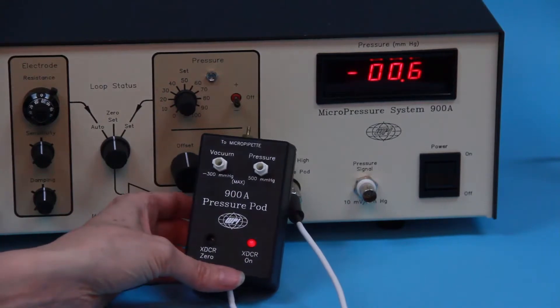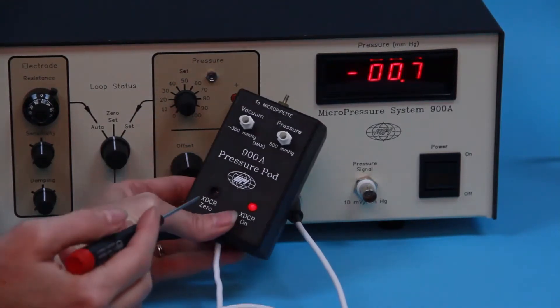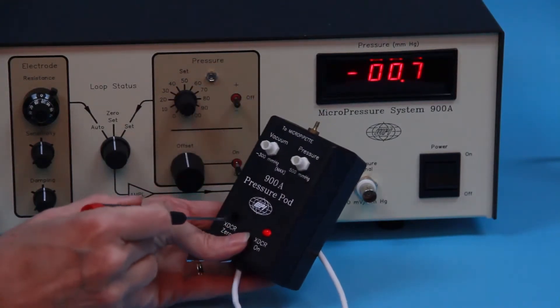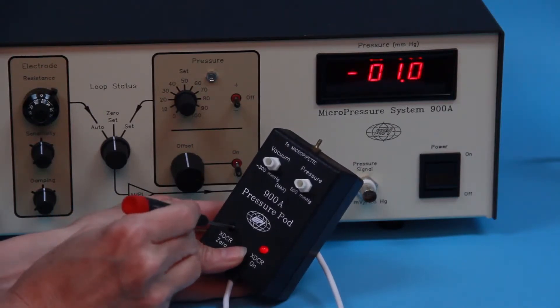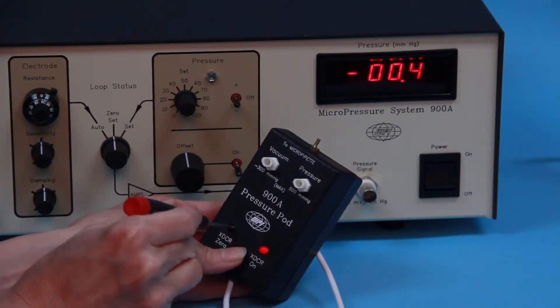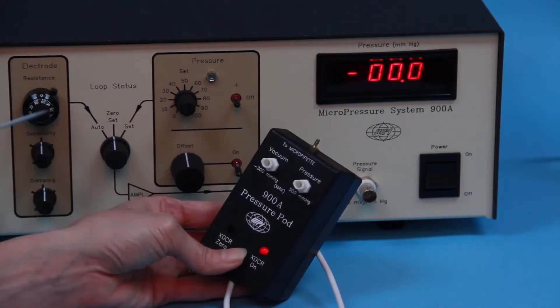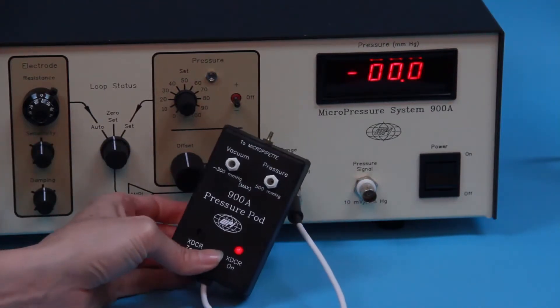Now we can zero the pressure pod. Do not apply any pressure or vacuum to the pressure pod. Insert a screwdriver into the recess on the pressure pod marked XDCR0 and turn clockwise or counterclockwise until the digital meter on the 900A reads 0.0 millimeters of mercury.